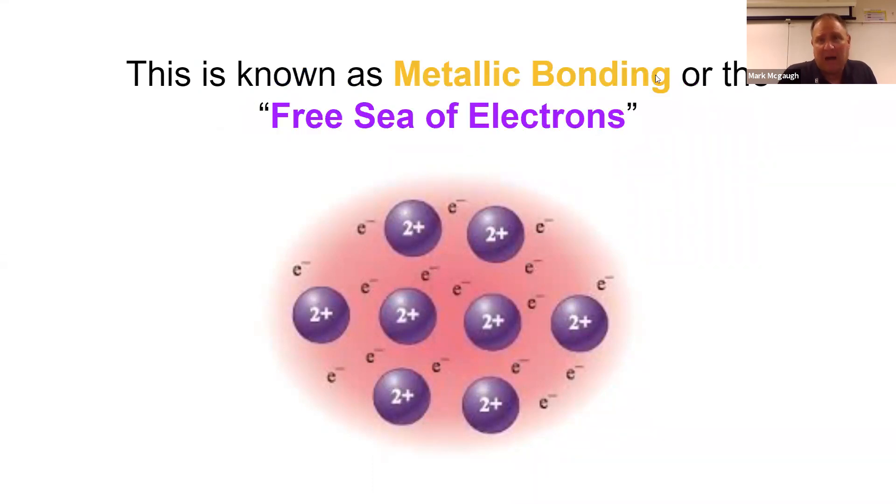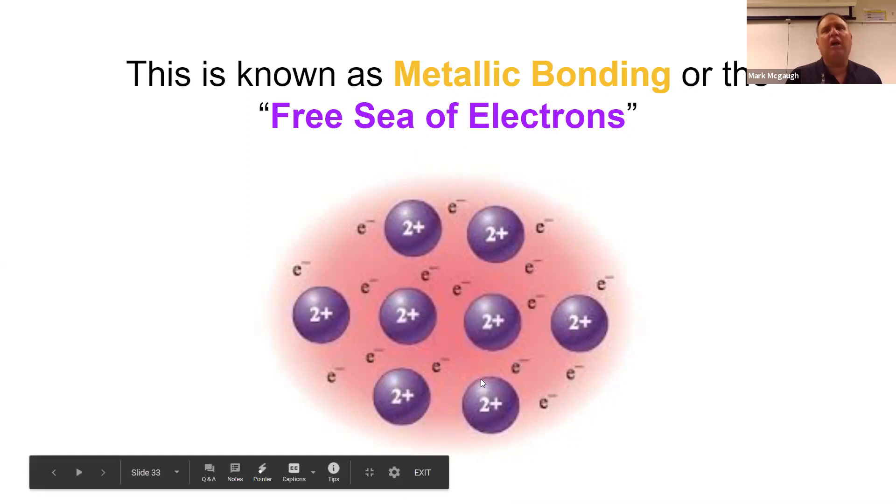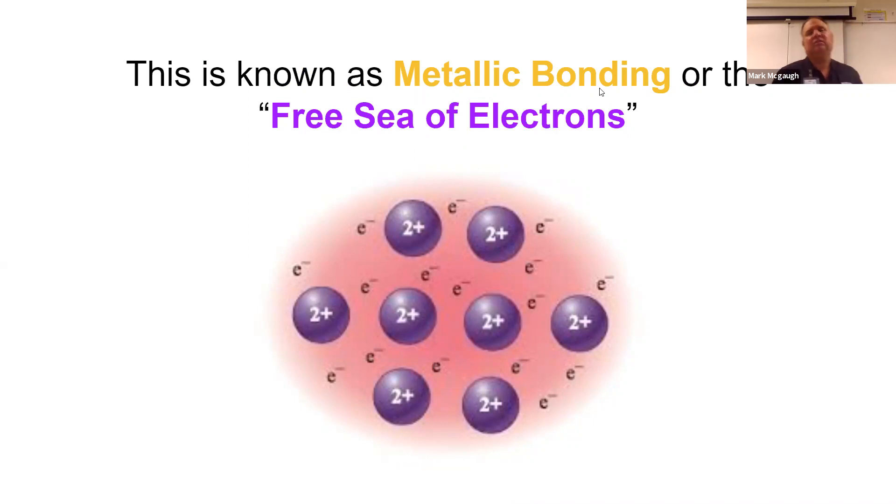And this is known as metallic bonding or a free sea of electrons. Why? The electrons can move where they want. That's called metallic bonding.